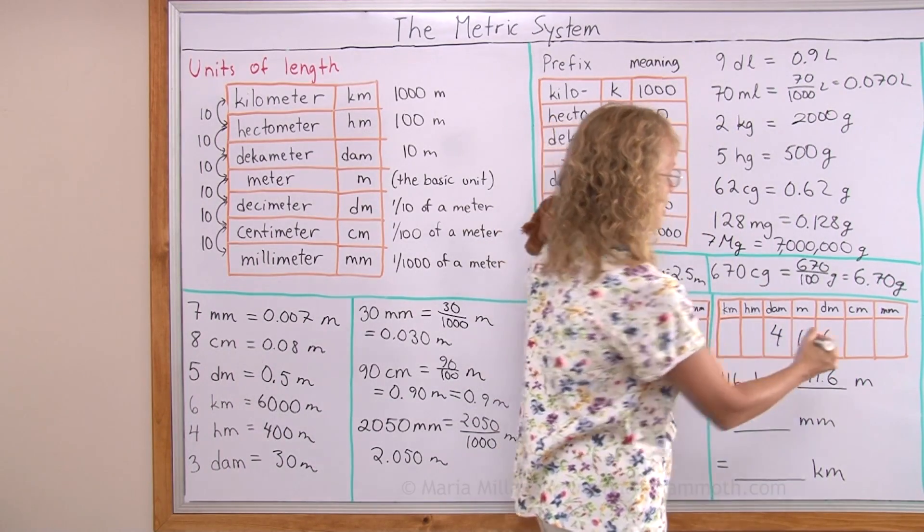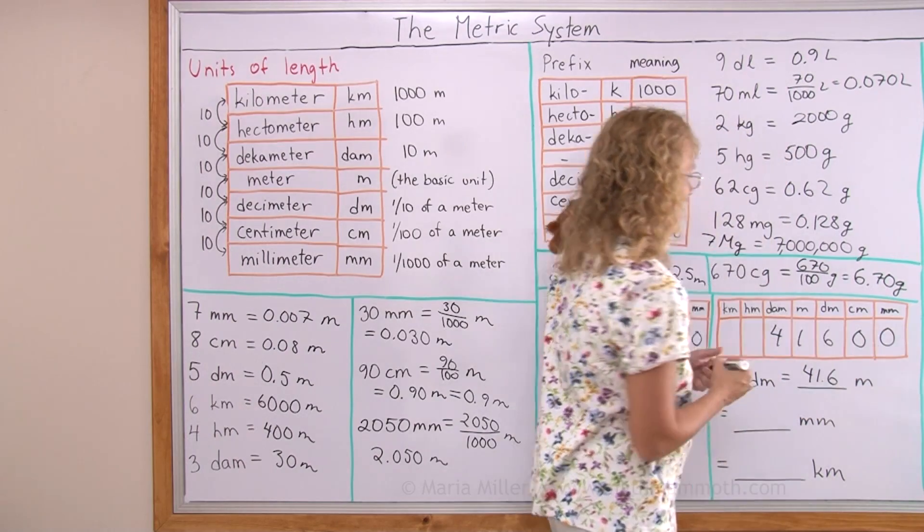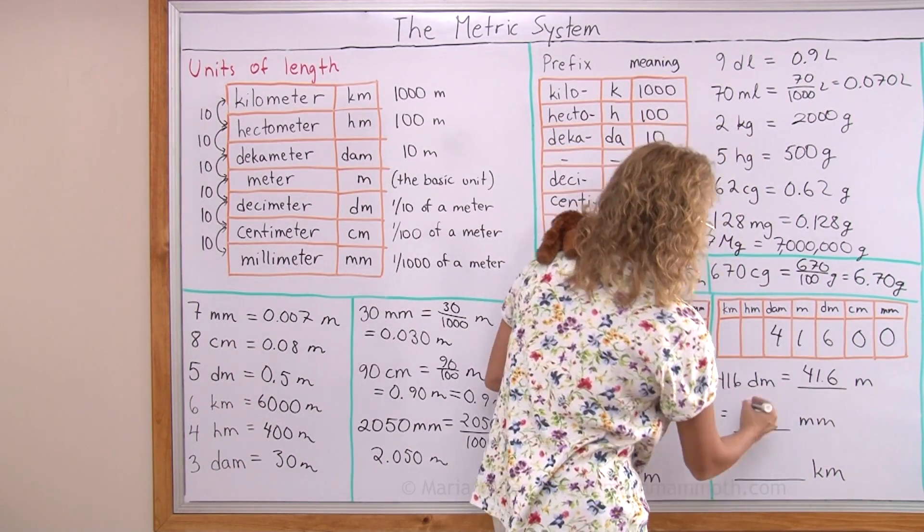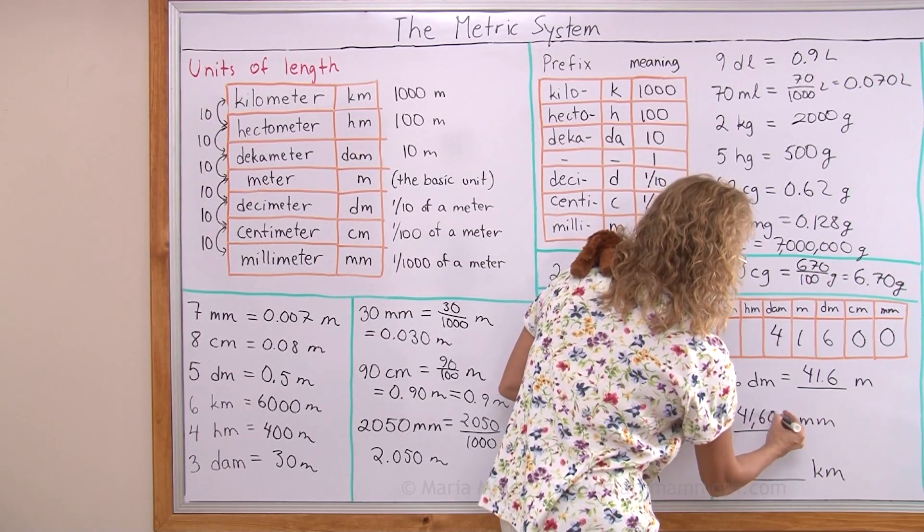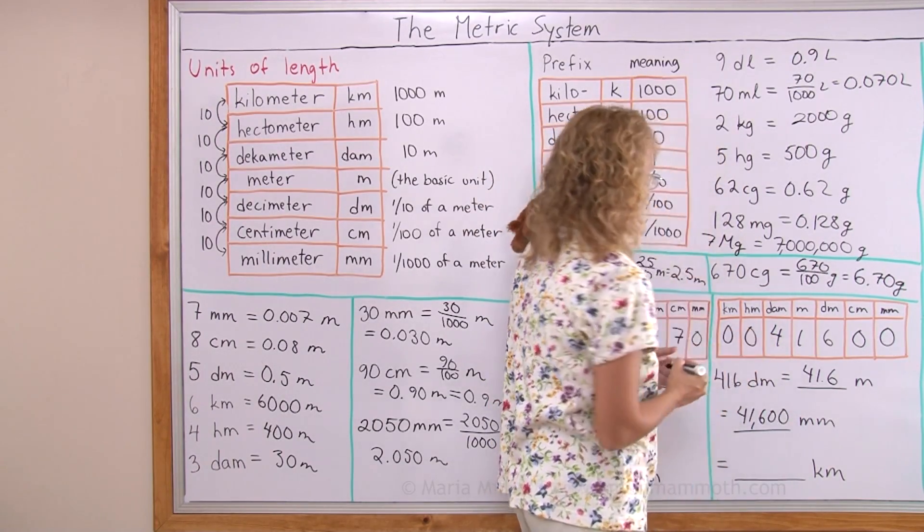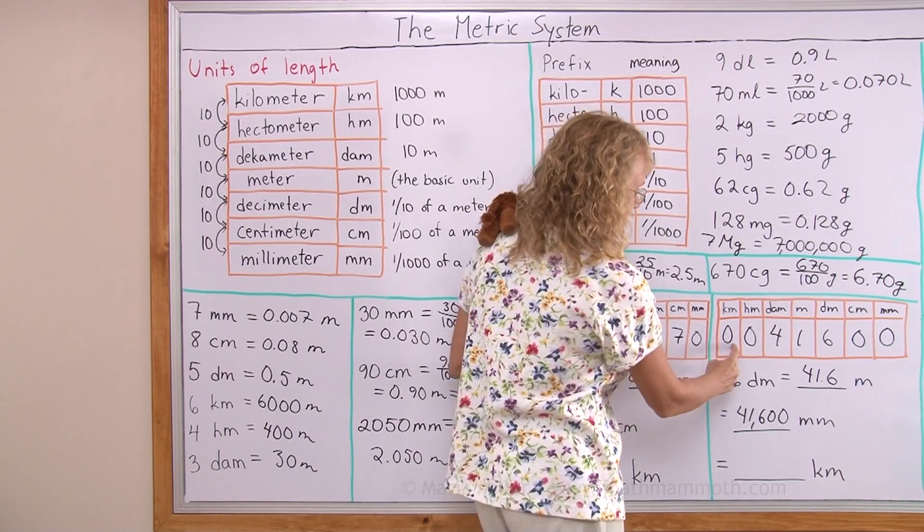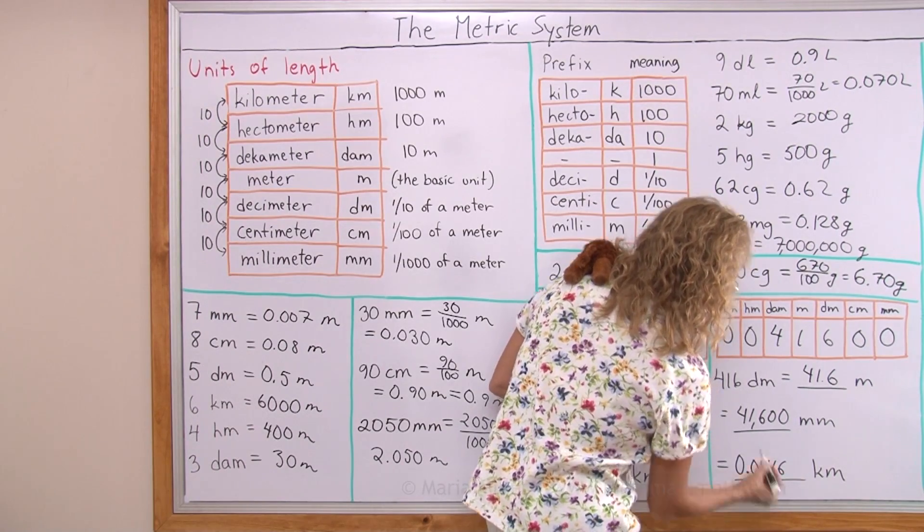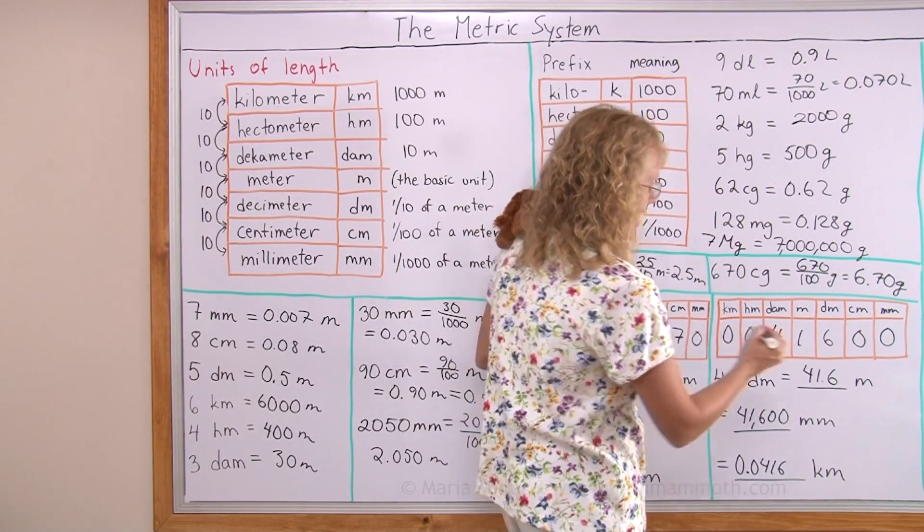Then in millimeters, I will put the zeros here. The decimal point would be over here. So I have forty-one thousand six hundred millimeters. And then as kilometers, my decimal point would be right here: 0.0416 kilometers.